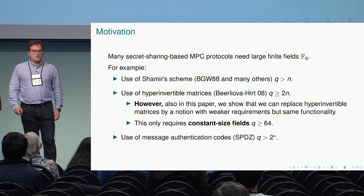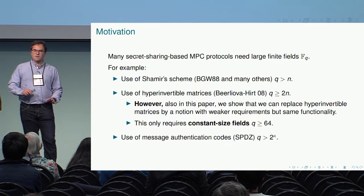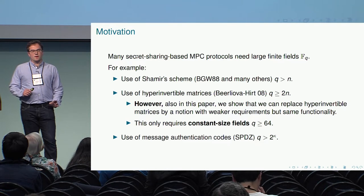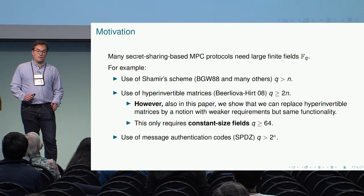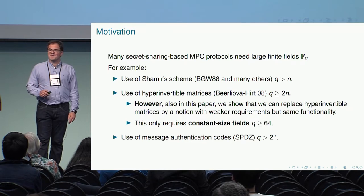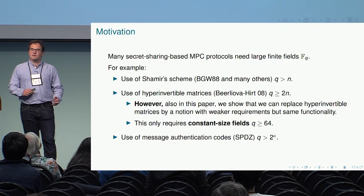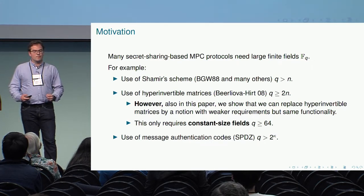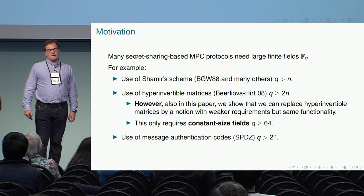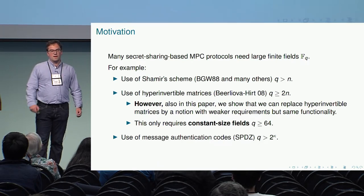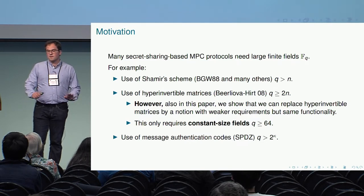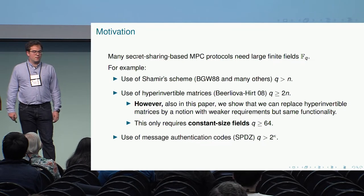I want to mention a side result that is unrelated to the rest of the talk. We can actually replace these hyperinvertible matrices by a notion that is a little bit weaker—with slightly weaker requirements—but still allows obtaining the same functionality. That notion only requires constant-size fields, with at least 64 elements. If you are interested in this, you can ask me later, but I will not talk more about that here.